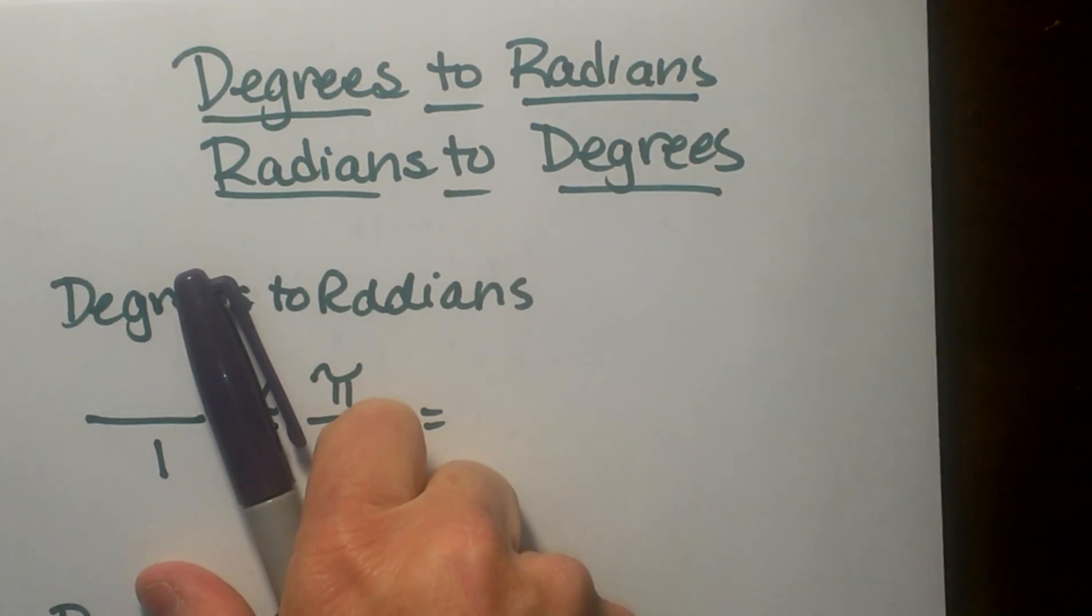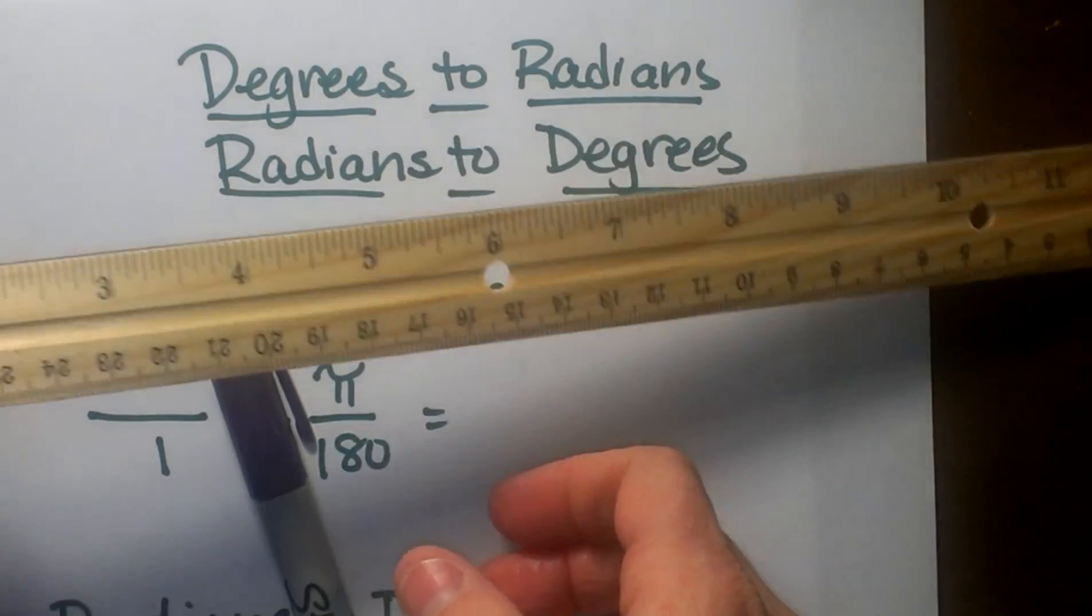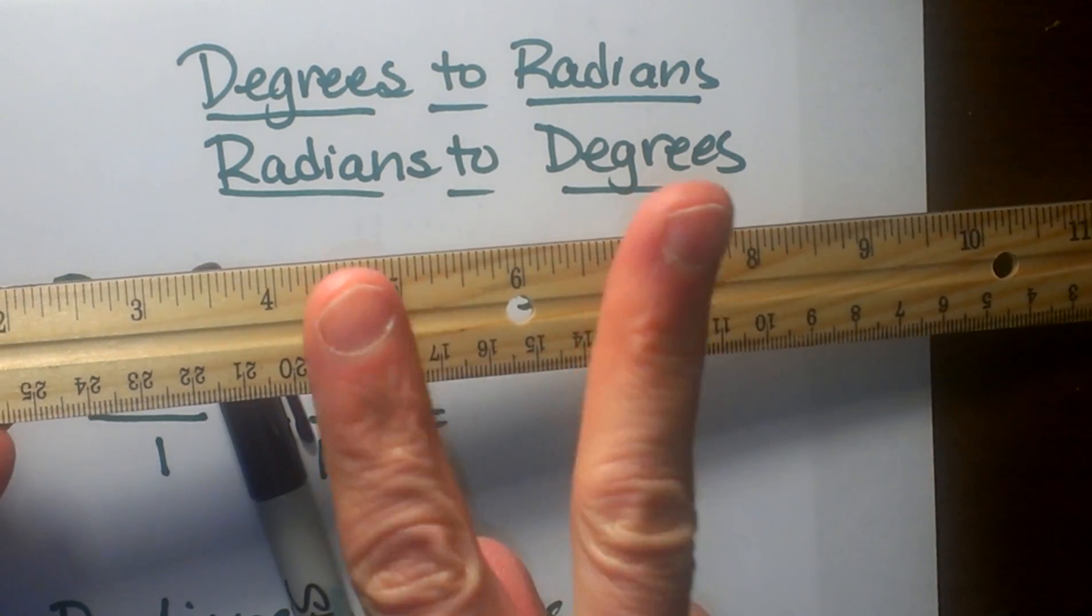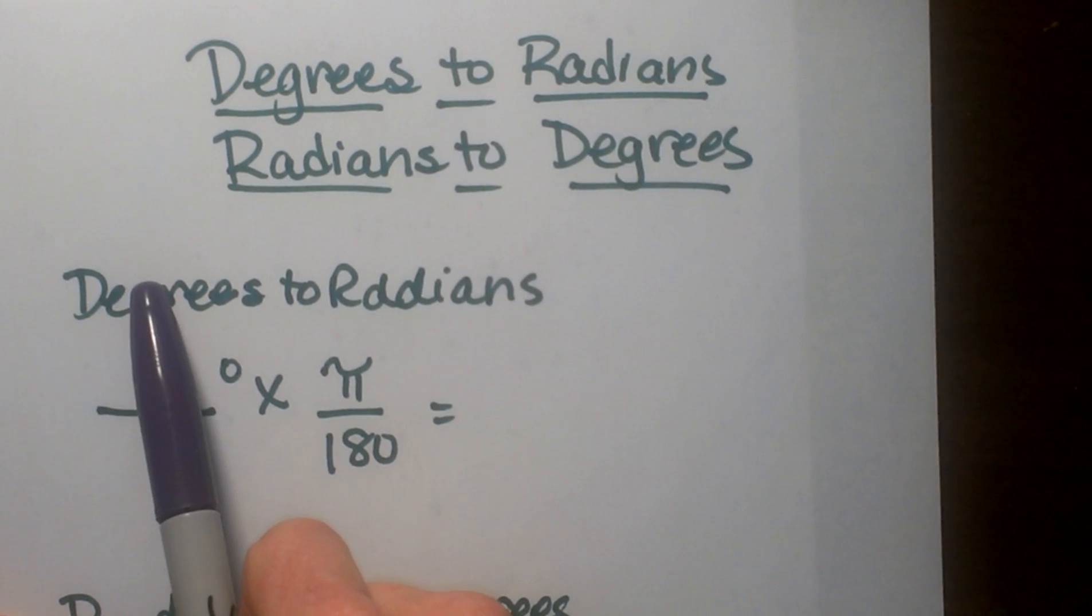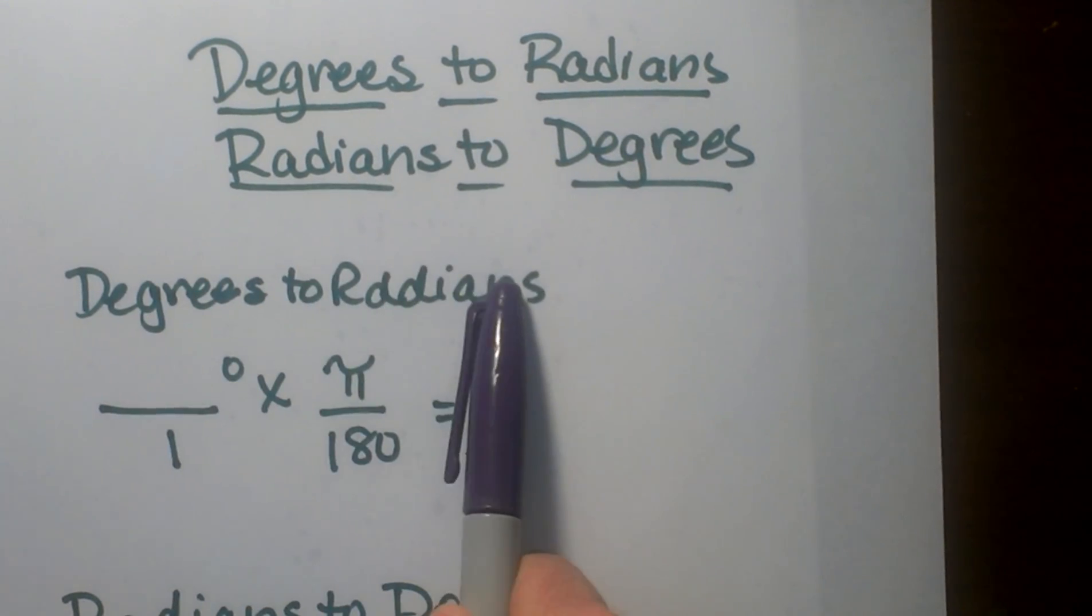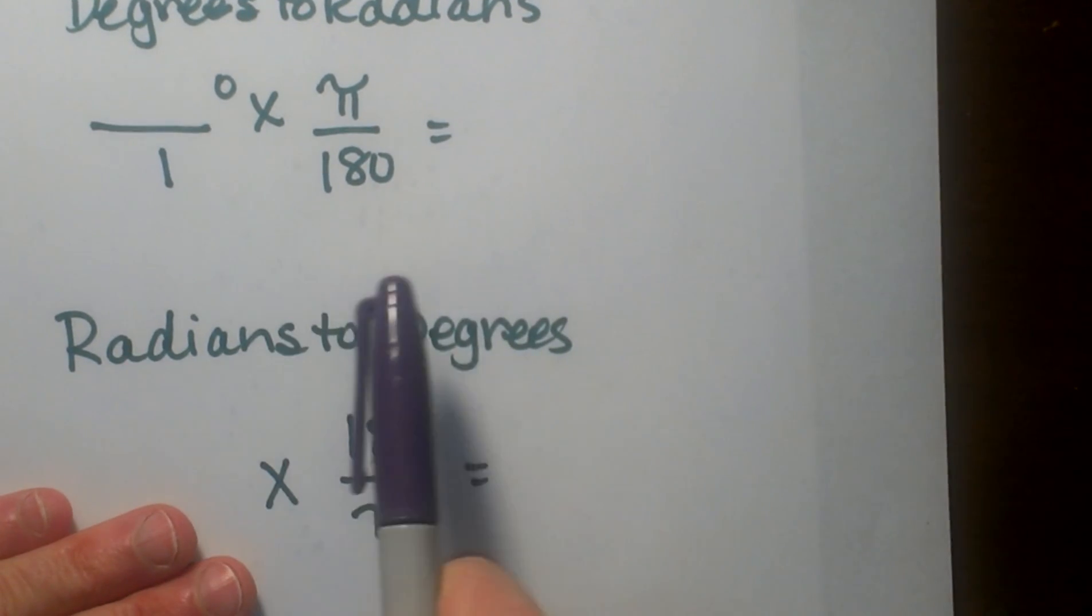I've done a short video that talks about the basics and why we use it and I relate it back to a ruler, so this is the second video. You may want to go back and watch the first one, but I'm going to show you how to convert from degrees to radians and then radians back to degrees.